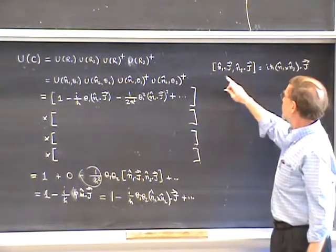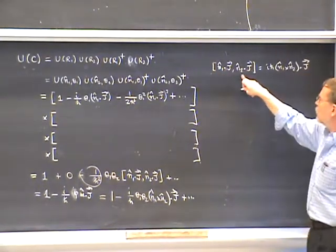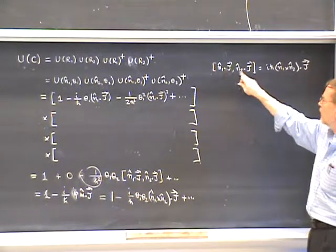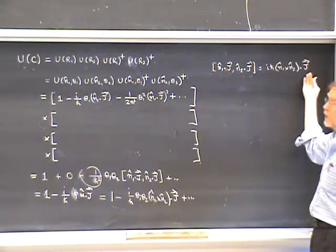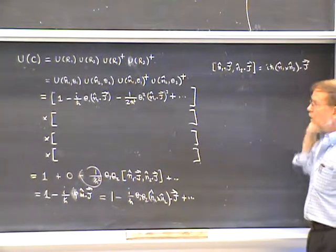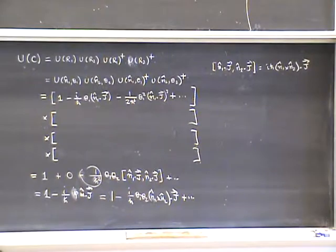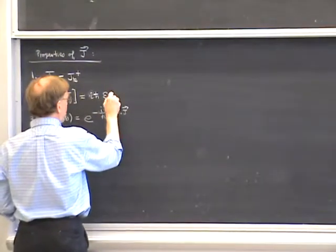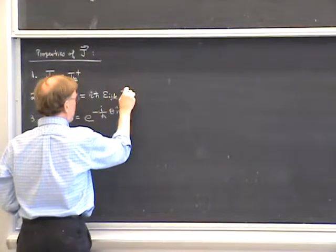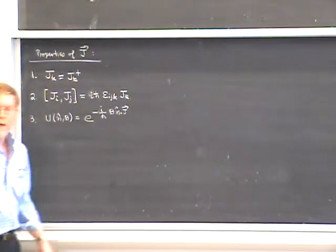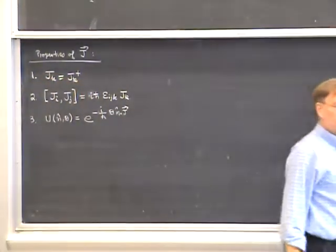For example, letting n-hat-1 be x-hat and n-hat-2 be y-hat, we get the commutator of Jx with Jy equals i h-bar Jz. More generally, the commutation relations are: [Ji, Jj] equals i h-bar epsilon-ijk Jk. This is how we derive the angular momentum commutation relations from the properties of rotations.